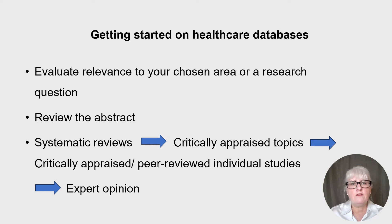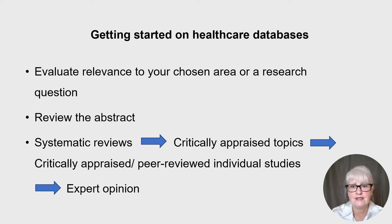At first you'll be looking through lots of abstracts. The title of the paper and the abstract may give you enough information to exclude it from your topic area — sometimes you look at an abstract and it's not what you expected at all, or it might just be an opinion piece in a different topic area. If the abstract doesn't offer enough information, then you would have to review the whole article if you're unsure.